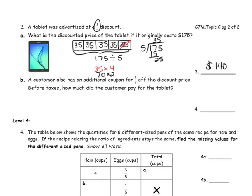I'm noticing that the numbering is off — sorry about that. This should say number 2A and this should say 2B. A customer also has an additional coupon for a seventh off the discount price. Before taxes, how much did the customer pay for the tablet?